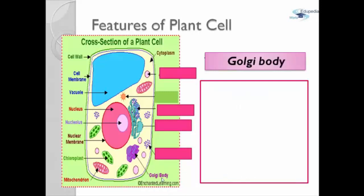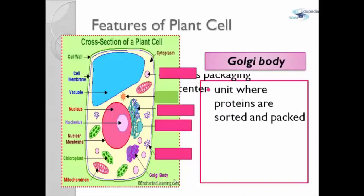Next is the Golgi body. This is the unit where proteins are sorted and packed. This is called the cells packaging center.